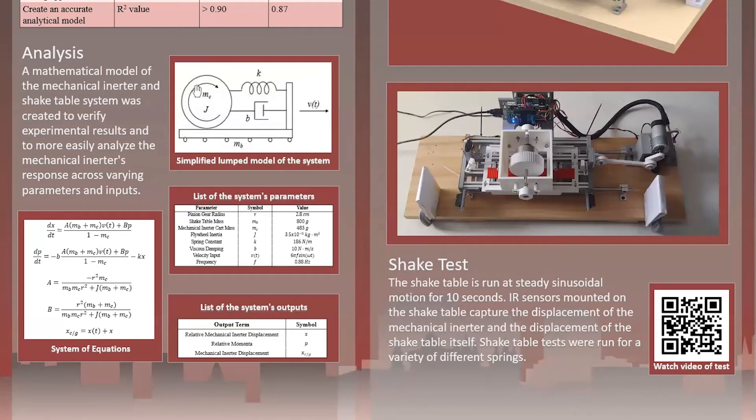The simplified model of the system is shown right here. Mechanical inerter is a cylinder of mass MC. The shake table is discard of mass MB. Relative motion between the two is created with spring and friction. Friction is assumed to be viscous. Non-linearities are limited. And the input into the system is velocity V of T, which is the sinusoidal velocity. So the system of second order and the system of equations shown right here. These states are X, which is the relative displacement of the mechanical inerter with respect to the shake table, and P, which is the relative momentum of the mechanical inerter with respect to the shake table.